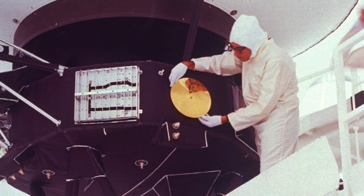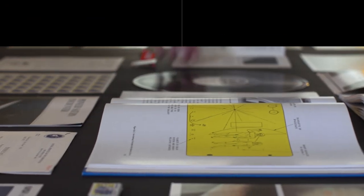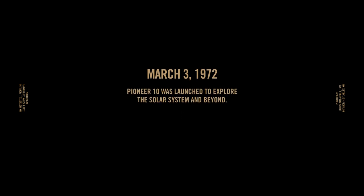Most of you are likely familiar with NASA's Voyager and its famous golden record, but you might not know that it wasn't the first such message from Earth. On March 3, 1972, Pioneer 10 was launched to explore the solar system and beyond.